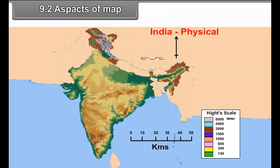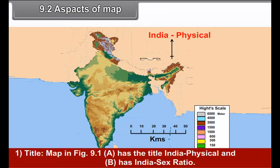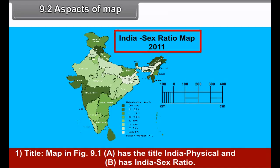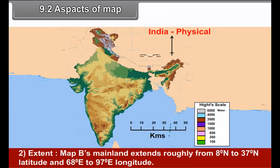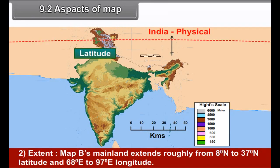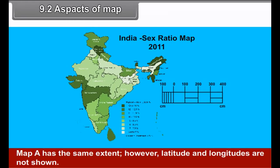9.2 Aspects of map. 1. Title. Map in figure 9.1 A has the title India Physical and B has India Sex Ratio. 2. Extent. Map B's mainland extends roughly from 8 degrees north to 37 degree latitude and 68 degrees east to 97 degree east longitude. Map A has the same extent. However, latitudes and longitudes are not shown.